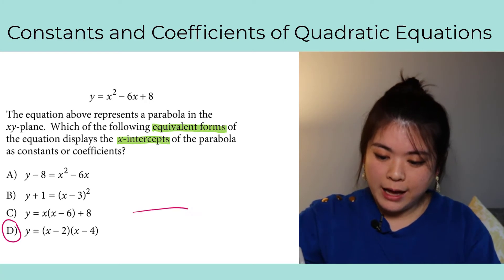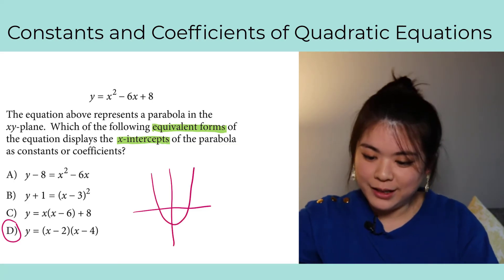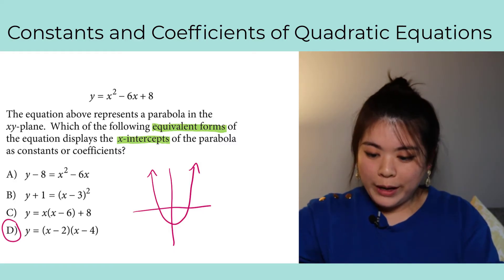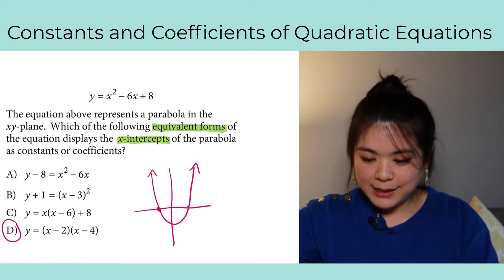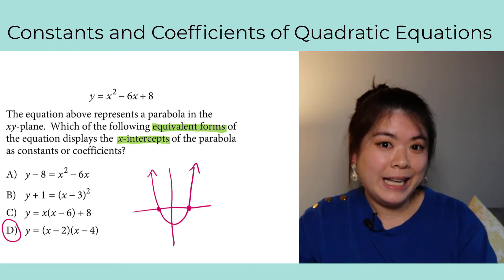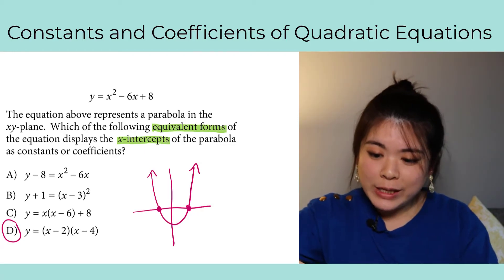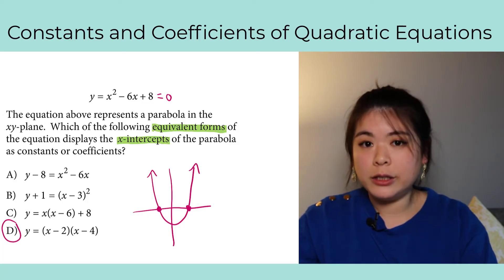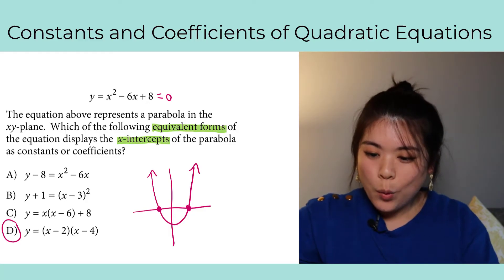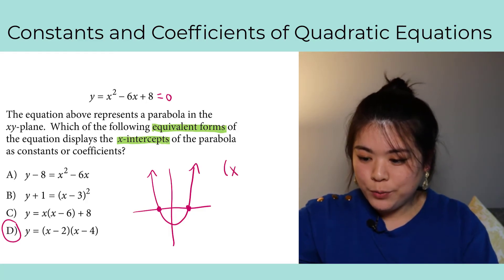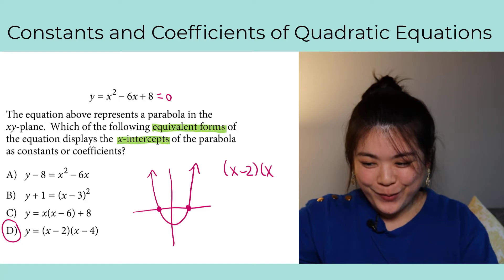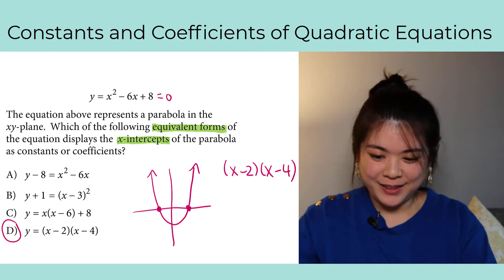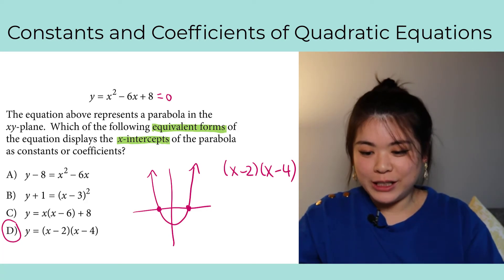Looking at A, B, C, D, wow, there's only one answer that even makes any sense, and that is D. Why? Because D is already in the factored form. If you want a little bit more, maybe we should define the x-intercept a little bit more closely. So if we look at a quadratic equation, I'm going to draw a smiley parabola, what is the x-intercept? Well, those are the points where we cross the x-axis, aka the points where y is zero.